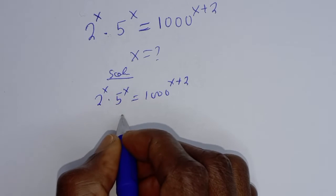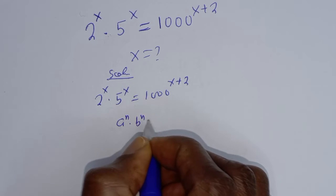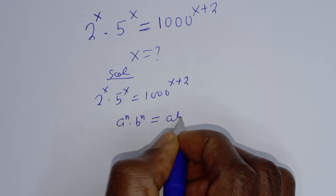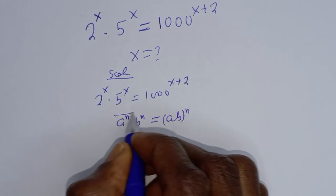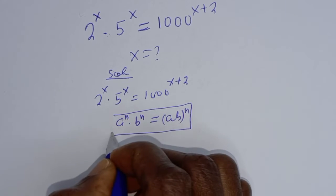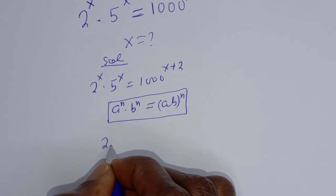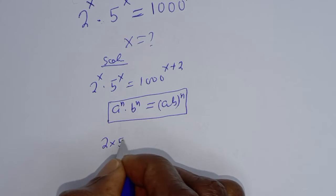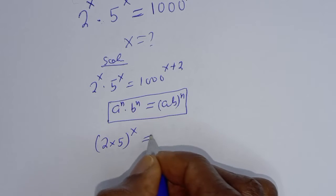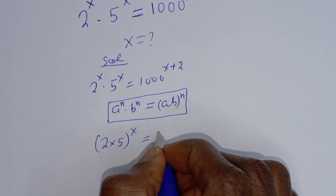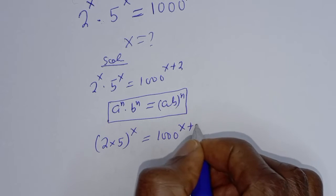Take note of this exponential rule: if you have a raised to power n multiplied by b raised to power n, this is equal to ab to the power of n. Then this can be written as 2 multiplied by 5 to the power of s is equal to 1000 raised to power s plus 2.